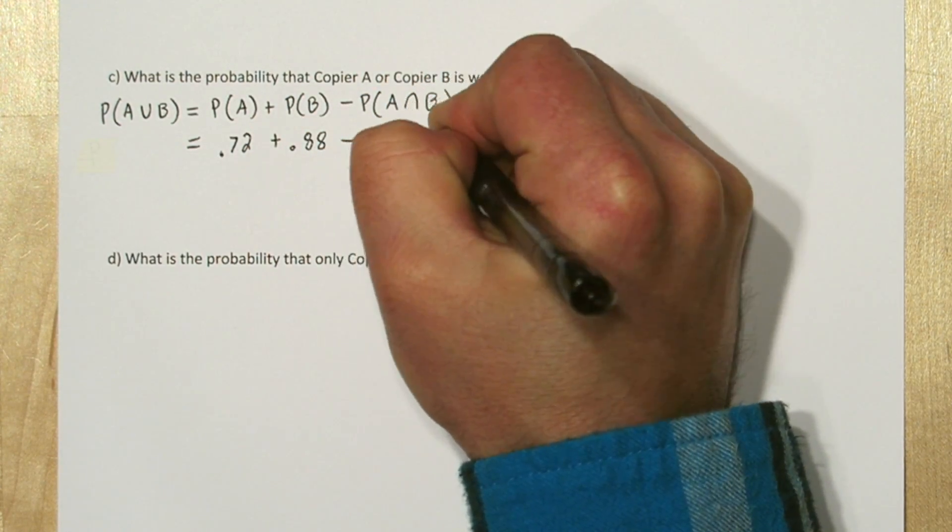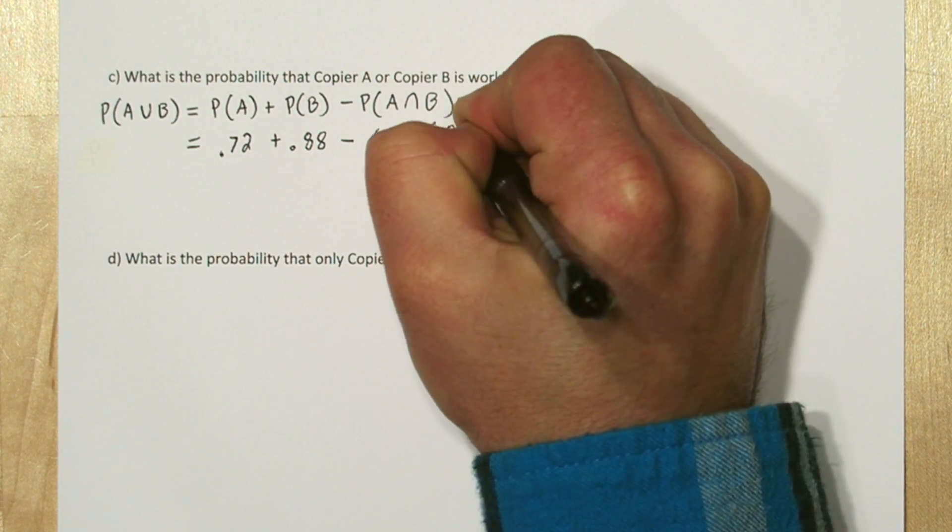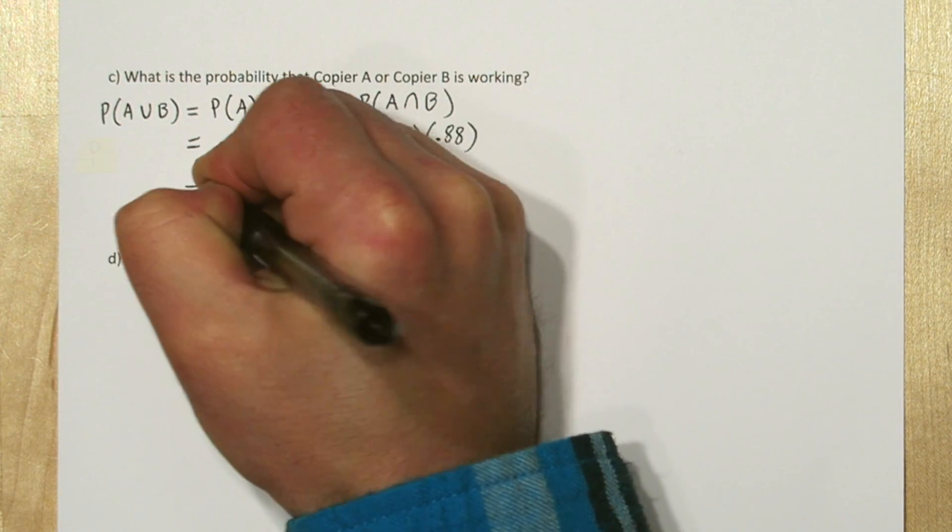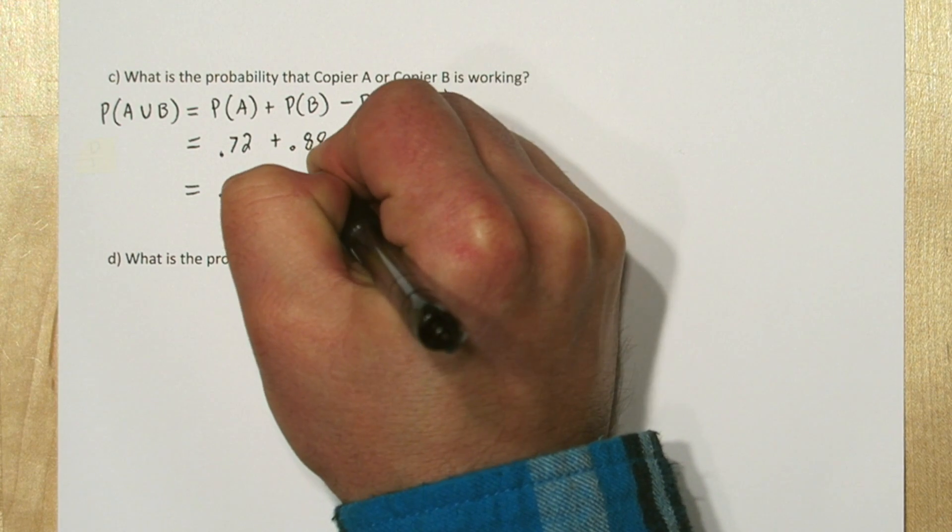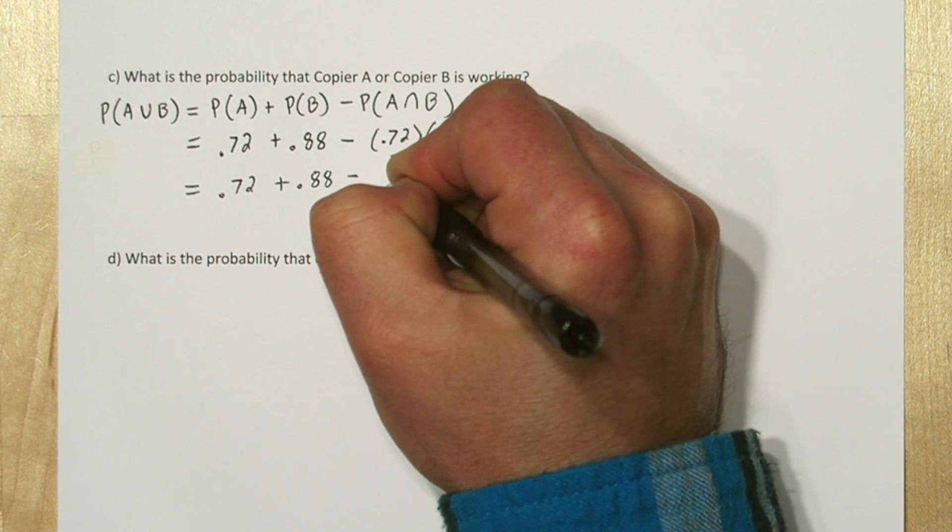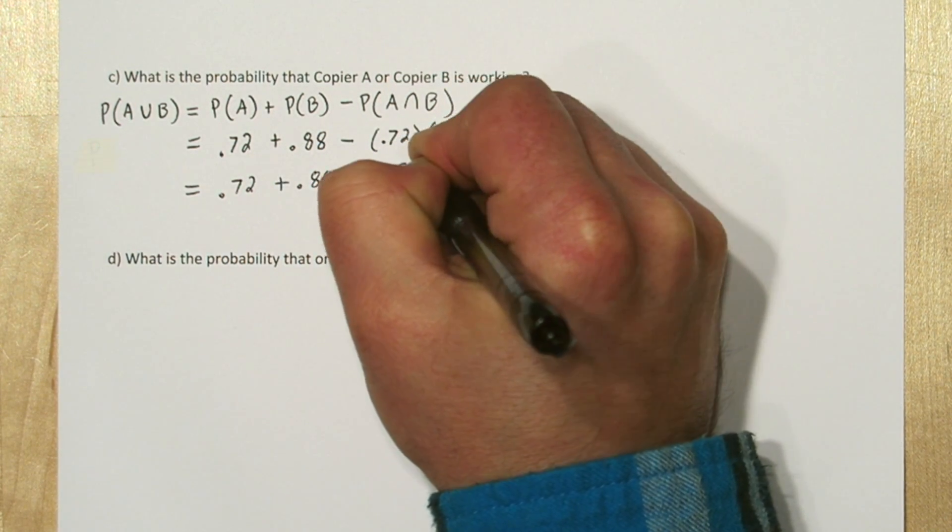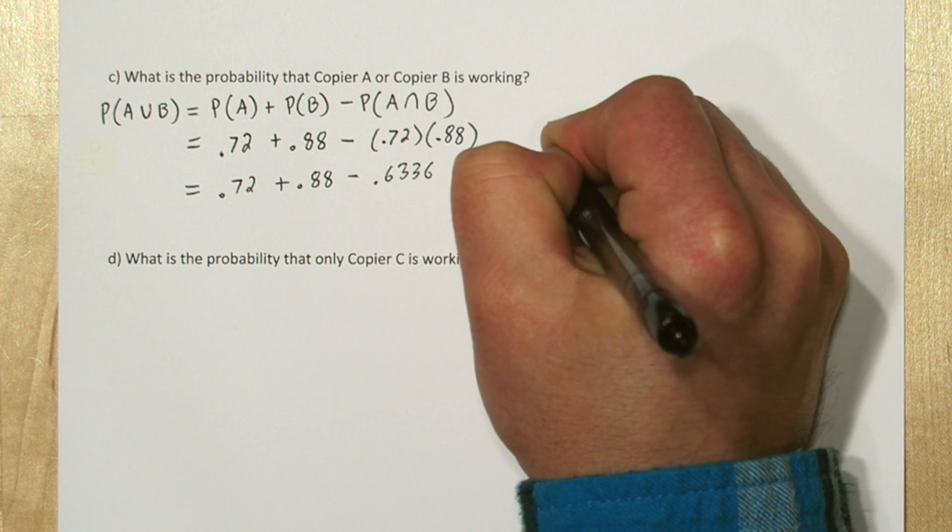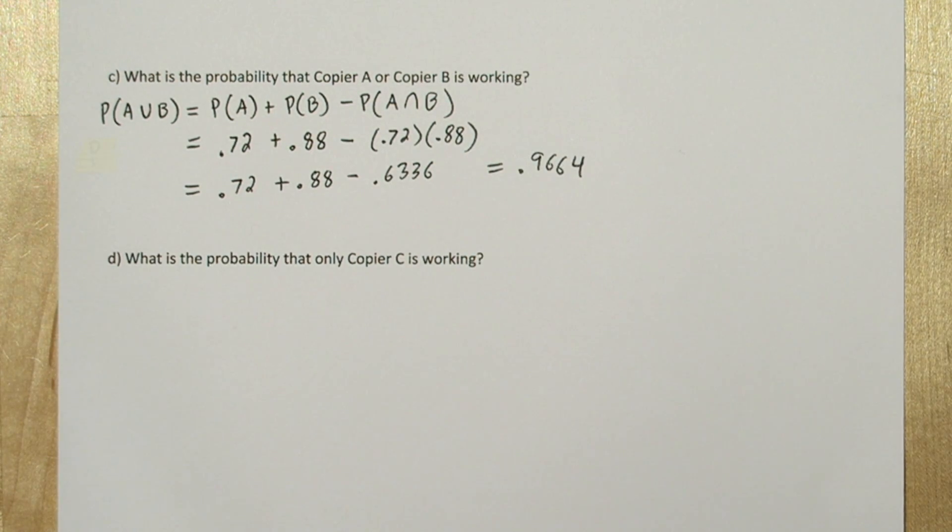And we need to subtract out the probability that both copy machine A and B are working. We can use the multiplication rule for independent events there, so the product of the two probabilities, which turns out to be 0.6336. Using our formula, we find out the probability of copier A or B working is 0.9664.